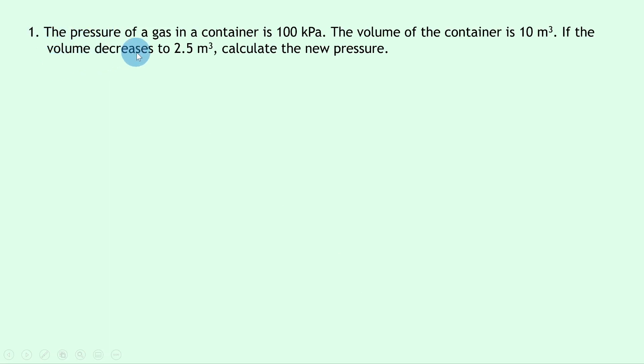So let's get started. Question one says that the pressure of a gas in a container is 100 kilopascals. The volume of the container is 10 meters cubed. If the volume decreases to 2.5 meters cubed, calculate the new pressure.